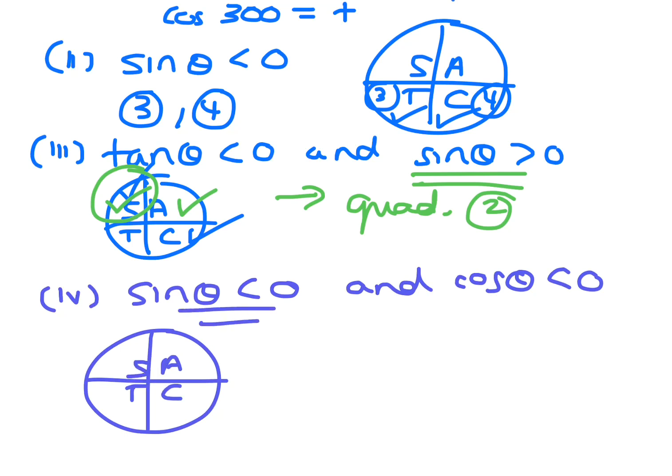Where is sine negative? It's not in 1 or 2, that's where it's positive. So it's 3 and 4. And where is cos negative? Cos is negative in 2 and 3. So where do they happen together? They would happen in quadrant 3.